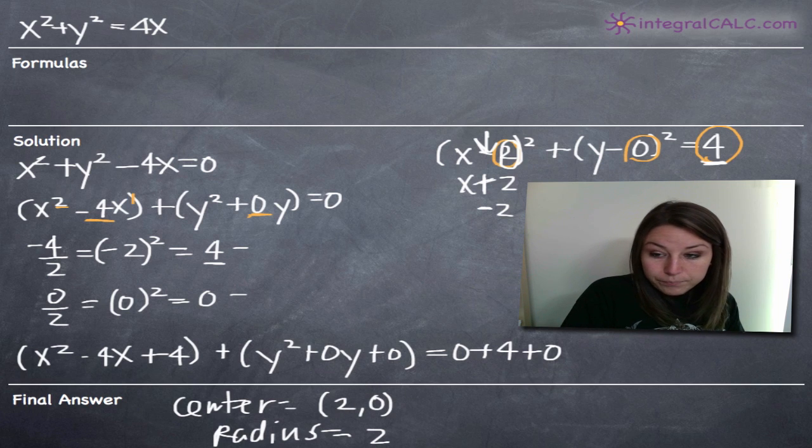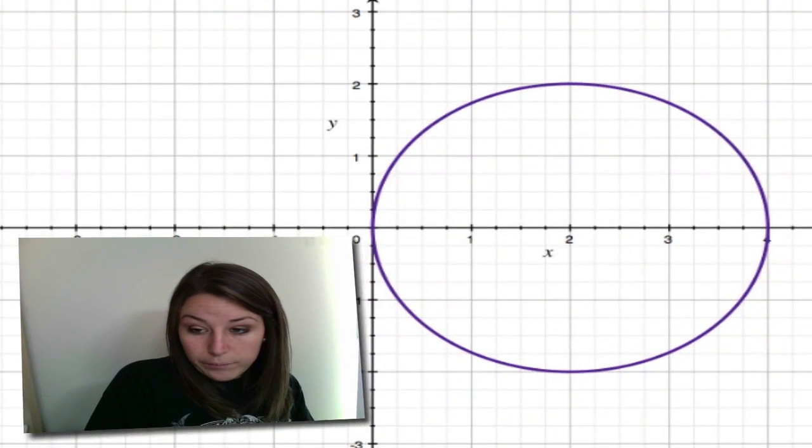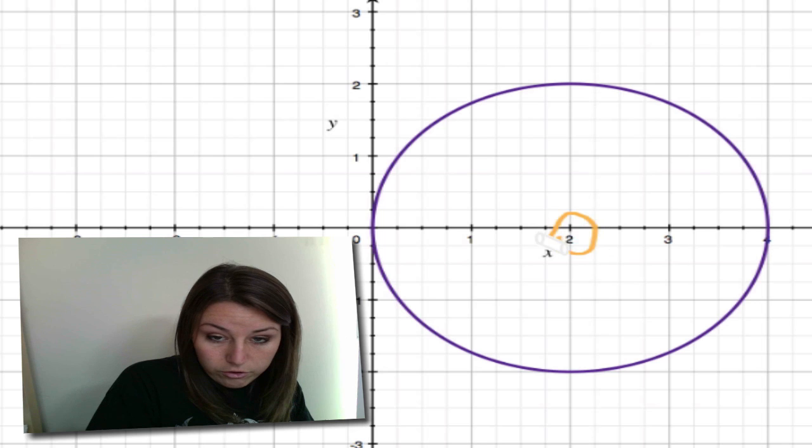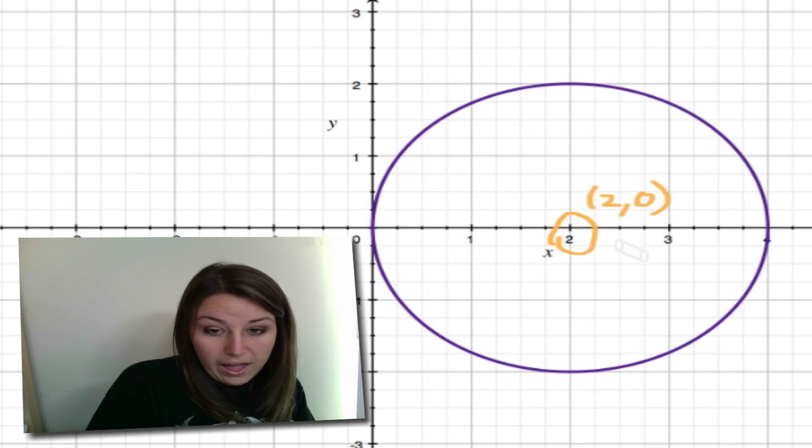So now, if we look at the equation of our circle and we graph it, remember the center is 2, 0 and the radius is 2. So if we look at our circle, we can see here that the center of the circle is right here at 2, 0. This is the point 2, 0.